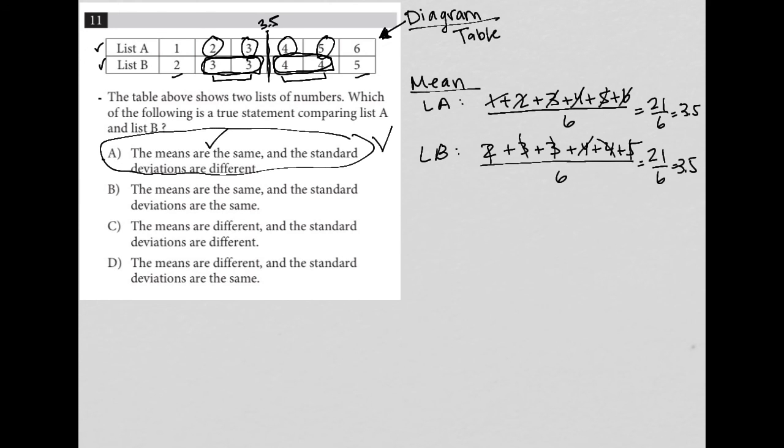So choice B does have the means are the same, but it says the standard deviations are also the same, so that's not true. And then choice C and D both say the means are different, and we're definitely certain that the means are exactly the same. So that's why choice A here is the best answer.